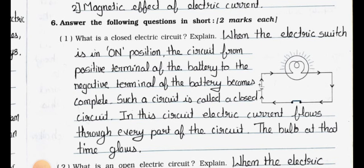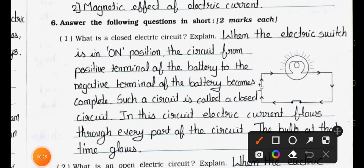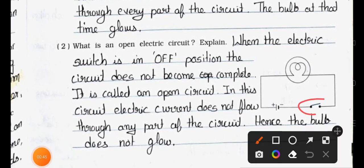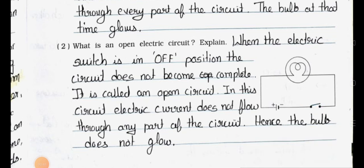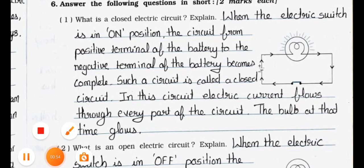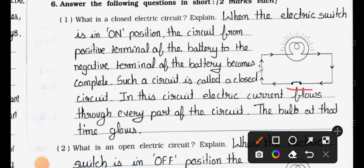Number one: What is a closed electric circuit? Explain. First, you have to understand what a closed circuit is. See this figure — this one is a closed circuit. And in this other figure, it is an open circuit. So this one is the open circuit, and here you can see that this one is the closed circuit.